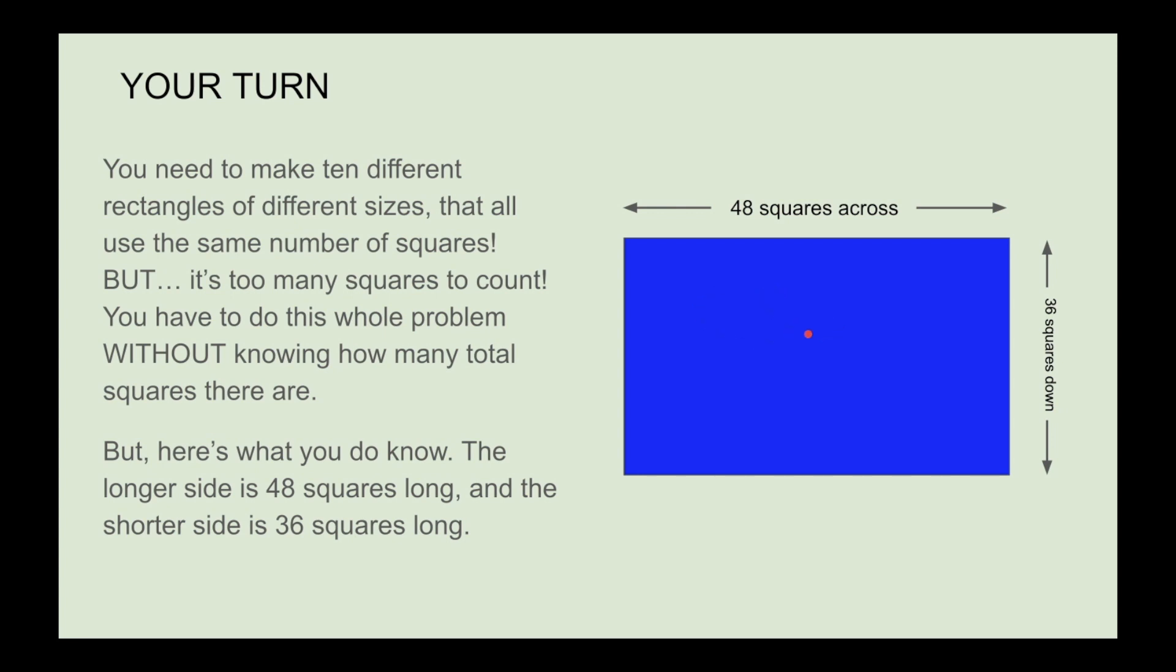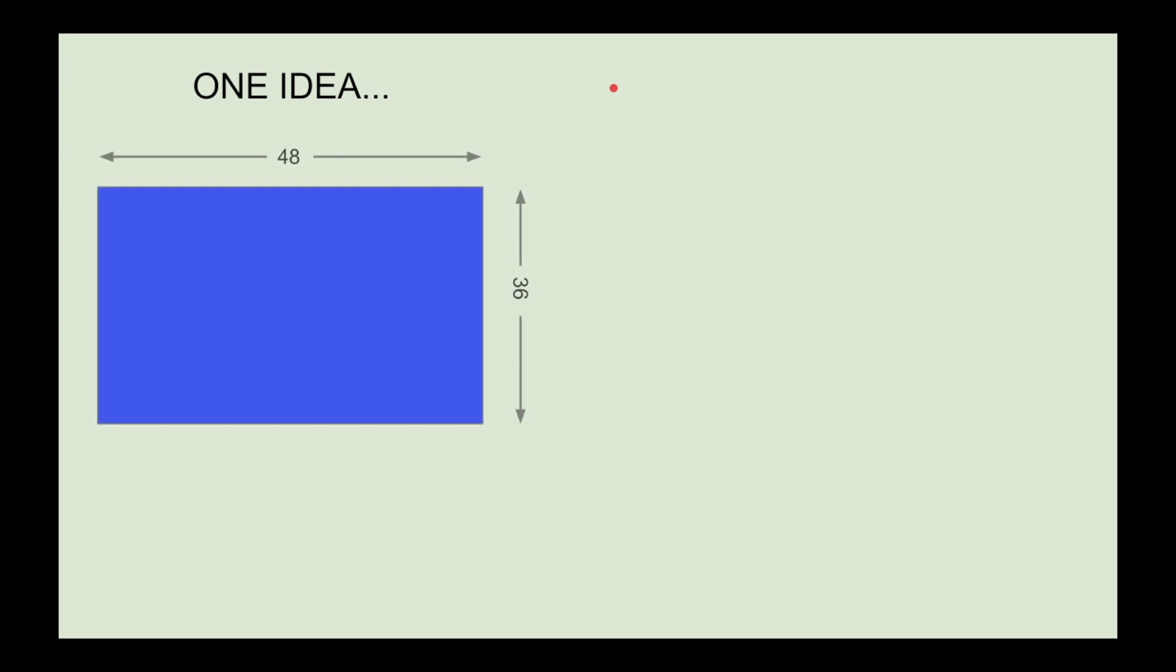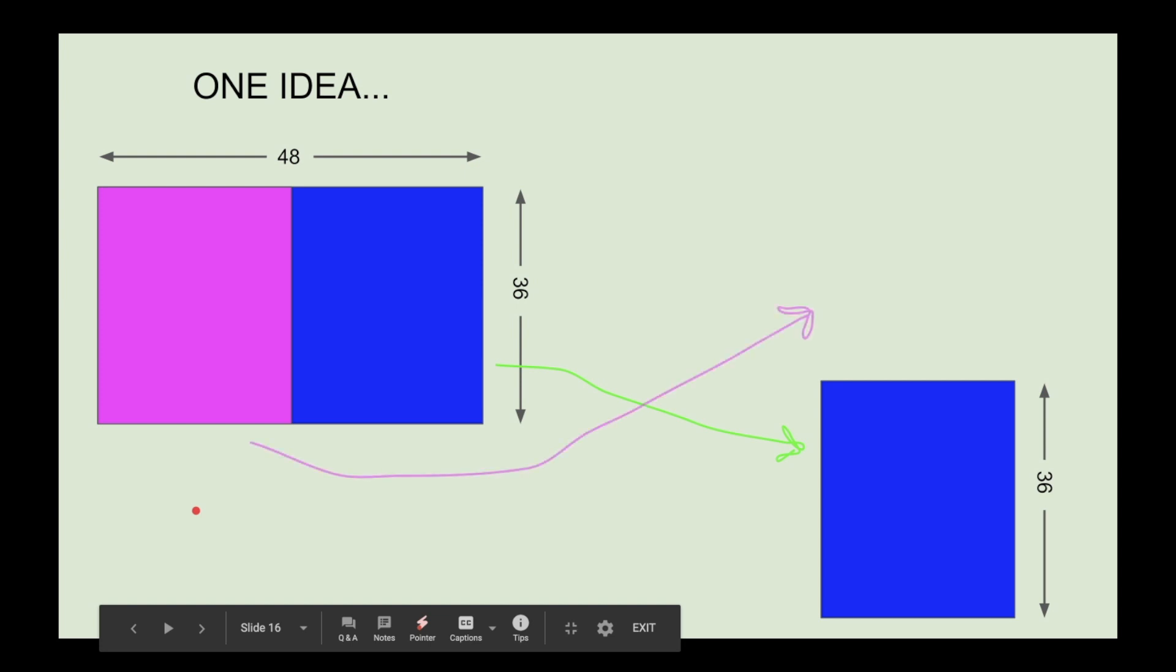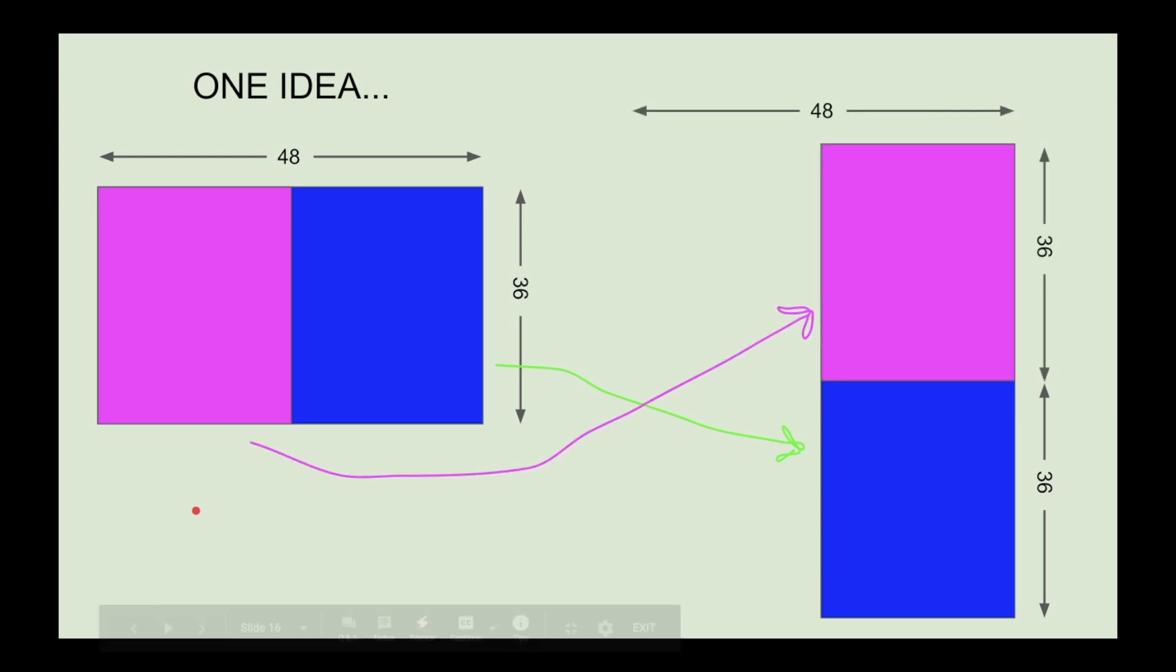So here's one idea. You could take this rectangle, you could chop it in half right down the center. You could take the blue part, move it over here, and you can take the purple part and put it on top. So we've reconfigured the rectangle into a different shape. It's still a rectangle, it still uses the same number of little cubes inside, still has the same total area, but it has different dimensions now.